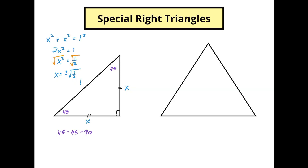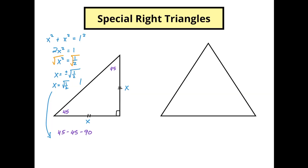Now we're talking about sides of a triangle. Since we're talking about sides of a triangle, you can't have a negative distance — you can't have a negative side — so we're only going to look at the positive value. That means x equals the square root of 1/2. We know from our rules of exponents that the square root is the same thing as the 1/2 power, so our square root of 1/2 is equal to (1/2)^(1/2).